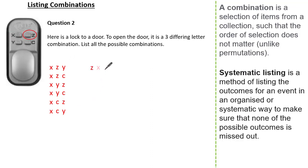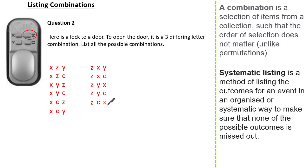Now let's start with the letter Z. We could have Z followed by X then Y, Z followed by X then C, Z followed by Y then X, Z followed by Y then C, Z followed by C then X, and Z followed by C then Y. You can see a systematic way of listing our outcomes starting with the letter Z.